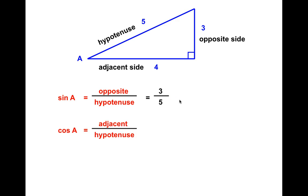Cosine is adjacent over hypotenuse. Adjacent here is 4, divided by the hypotenuse, which is 5. So the cosine of angle A is 4 fifths.